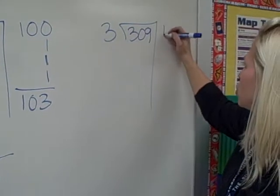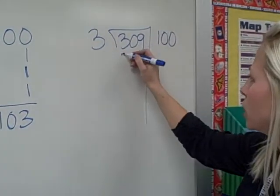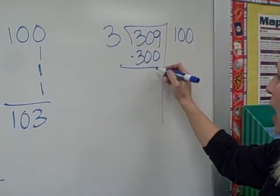We'll just keep going. Okay, so we'll do 100 times 3 is 300 and when we subtract that we get 9.